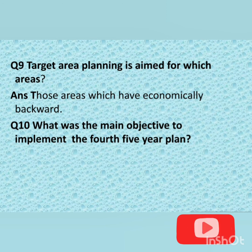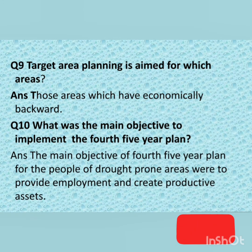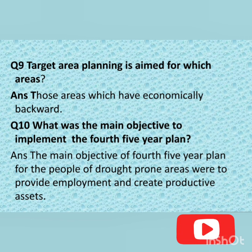Question number ten: What was the main objective of implementing the Fourth Five-Year Plan? The main objective of the Fourth Five-Year Plan for people of drought-prone areas was to provide employment and create productive assets. Its aim was to provide water facilities and employment to them.